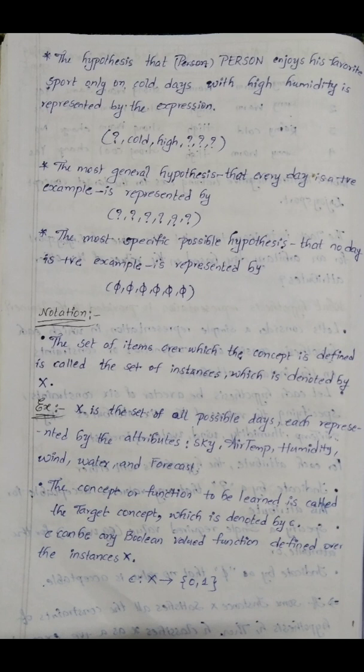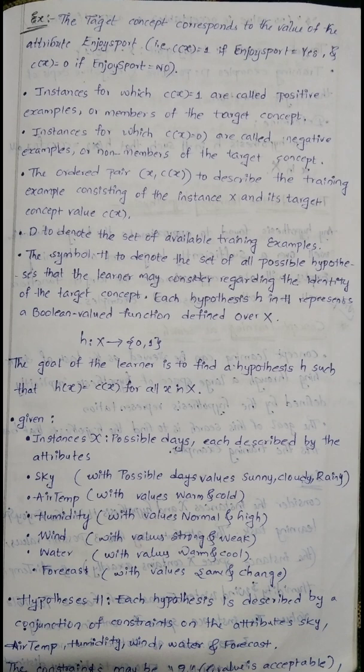The target concept corresponds to the attribute 'enjoy sport': c(x) = 1 means he will enjoy the sport; c(x) = 0 means he won't enjoy the sport. Instances for which c(x) = 1 are called positive instances — he will enjoy the sport. c(x) = 0 are negative instances — he won't enjoy the sport.